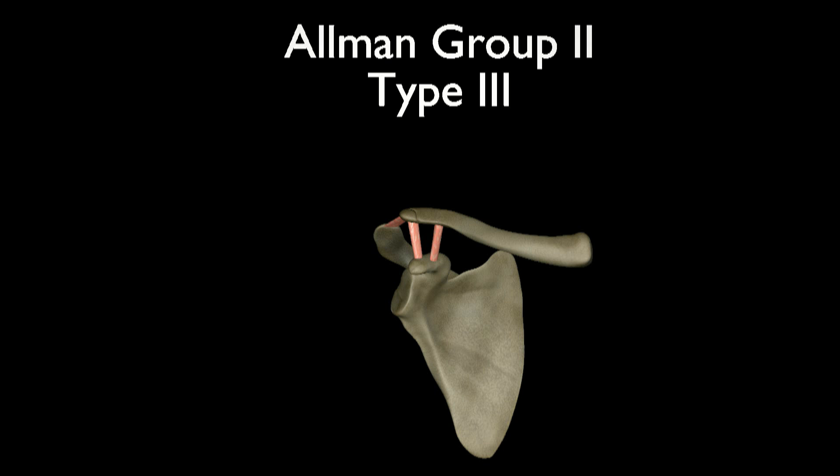Group 2 type 3 fractures are fractures that occur distally to the coracoclavicular ligaments. These fractures occur at and sometimes through the acromioclavicular joint. They are usually treated without surgery but can result in arthritic changes in the AC joint later on.